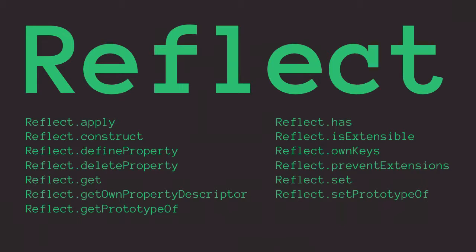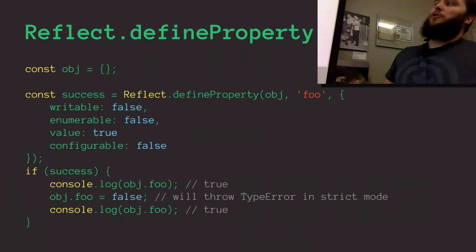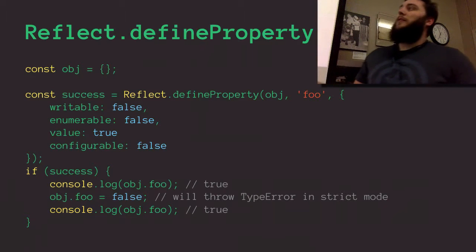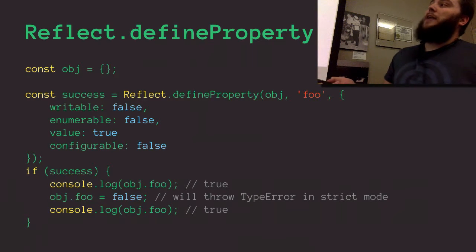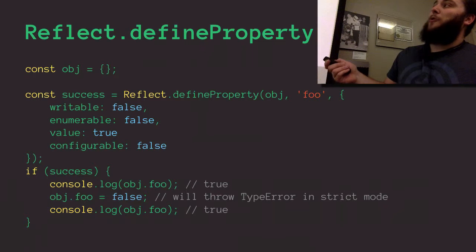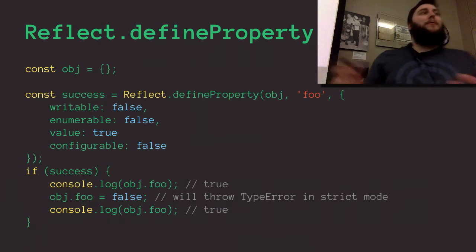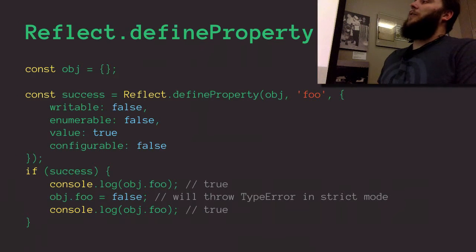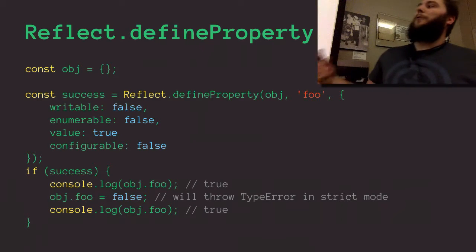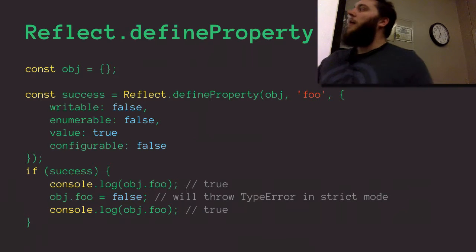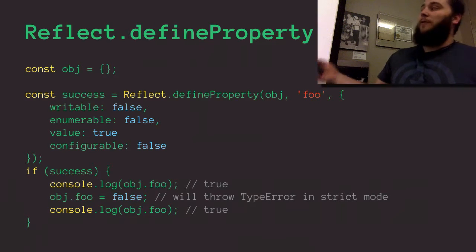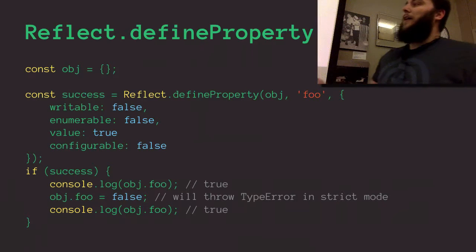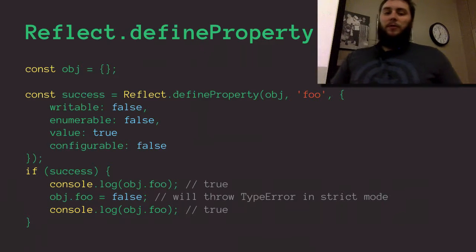Let's look at a few Reflect methods in detail. First, Reflect.defineProperty — I've got an object called obj and I define a foo property on it, making it non-writable (read-only) with value true. I get back a return value and do a check: if it was successful, I read the value, try to change it (which will throw in strict mode), log it again, and see it hasn't changed.